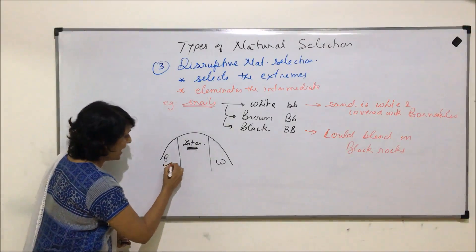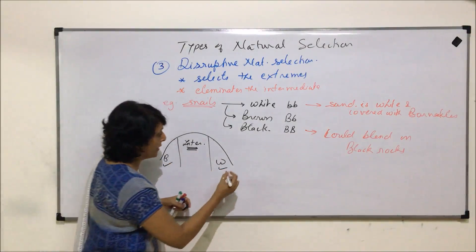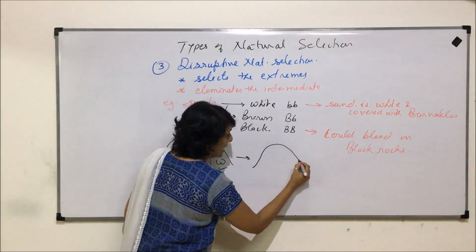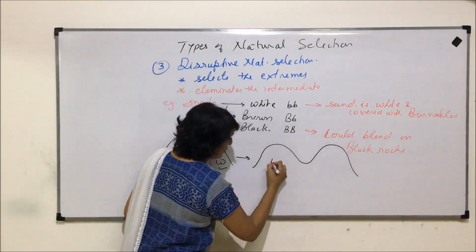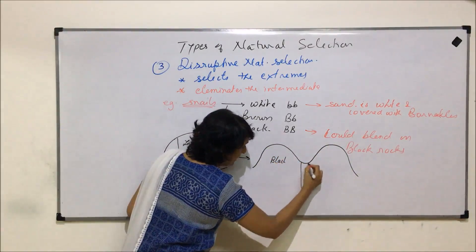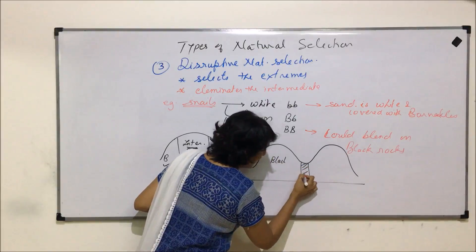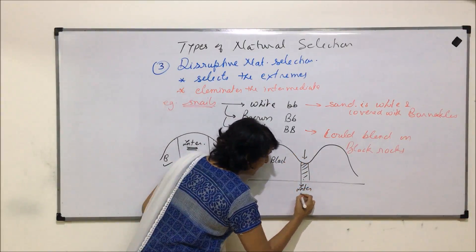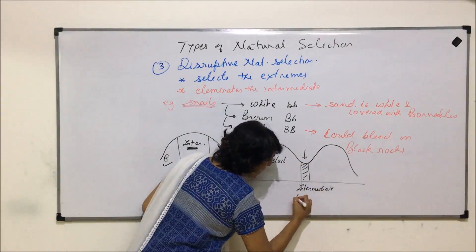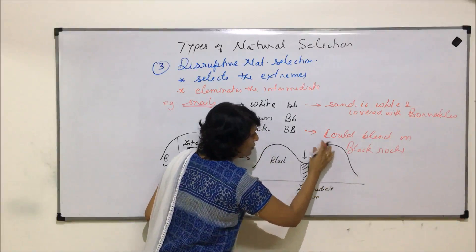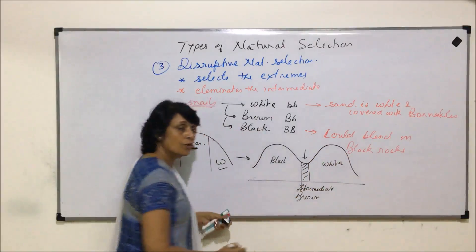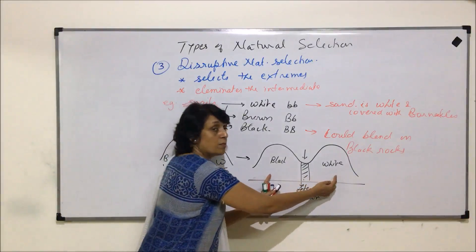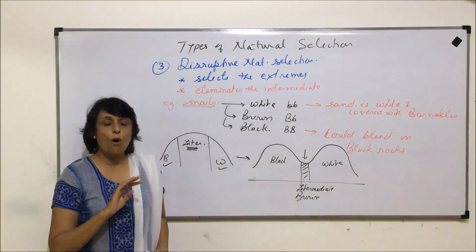Because the brown intermediates are easily spotted, they get eliminated, while the black and white extremes are more suitable in their respective environments and their populations increase. The resulting graph shows two peaks — one for the black population and one for the white — with a depression in the middle representing the reduced intermediate brown population.